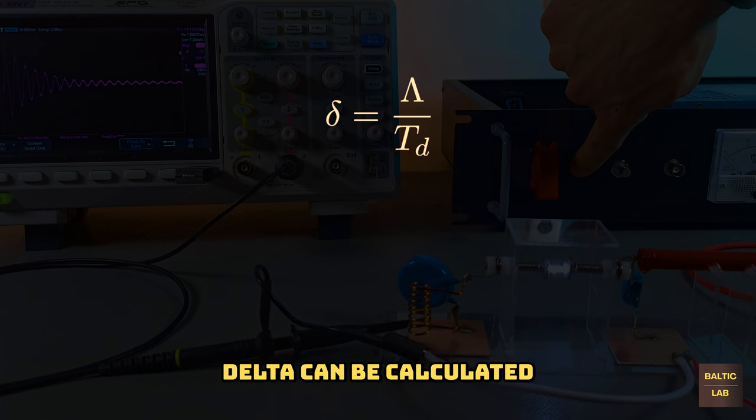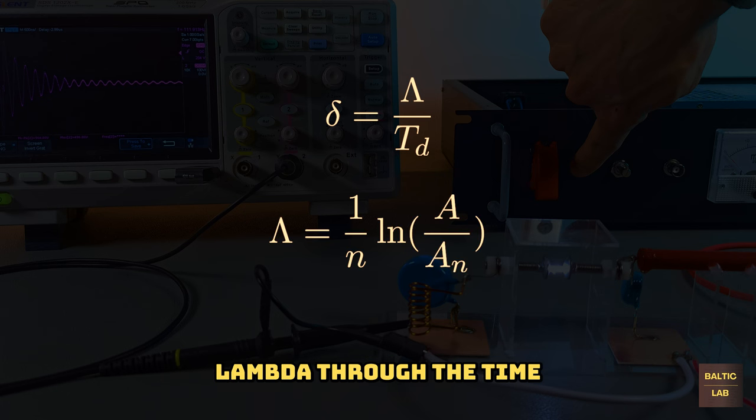The decay rate delta can be calculated by dividing the logarithmic decrement, lambda, through the time period of the oscillation.